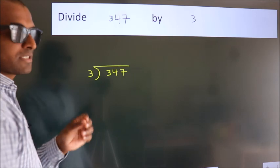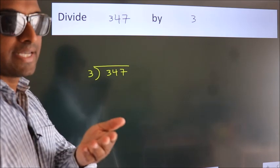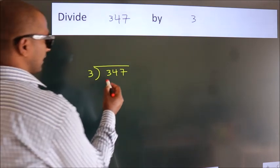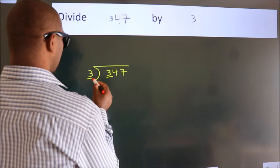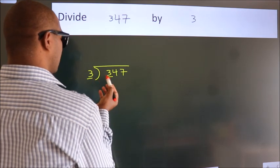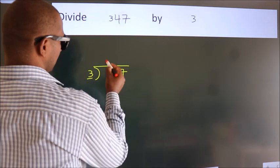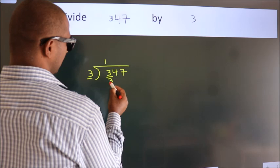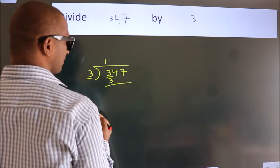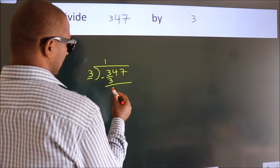This is your step 1. Next, here we have 3, here 3. When do we get 3? In the 3 table: 3 once 3. Now we should subtract. We get 0.